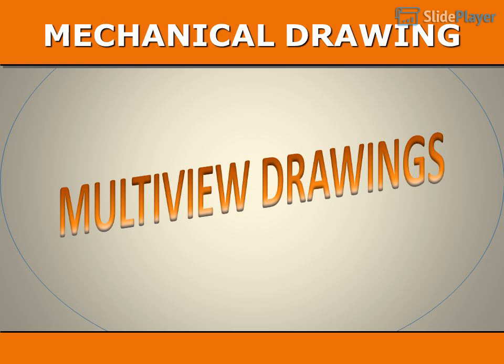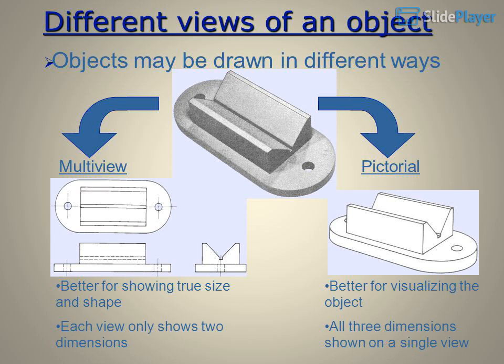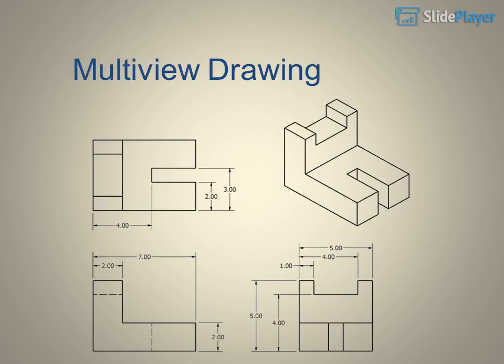Mechanical drawing includes multi-view drawings, which show different views of an object. Objects may be drawn in different ways: multi-view or pictorial. Multi-view is better for showing true size and shape, with each view showing only two dimensions. Pictorial drawings are better for visualizing the object, with all three dimensions shown on a single view.